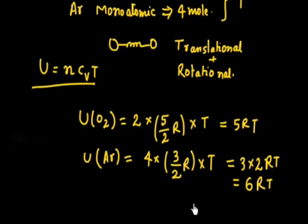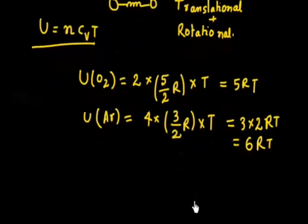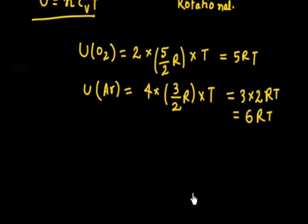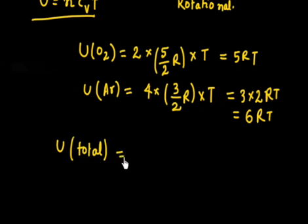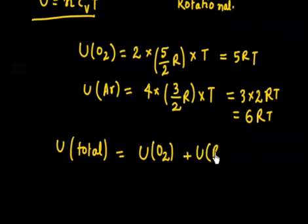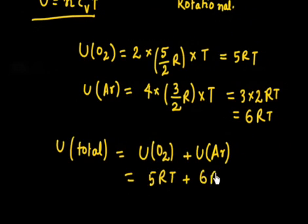So what is the total energy? You can see internal energy. If you are mixing these two gases, internal energy will be simply summed. So total internal energy will be internal energy of oxygen plus internal energy due to argon. So I have to write argon. Now this is 5 R T plus 6 R T. This is simple. So total internal energy will be 6 plus 5, 11 R T. So simple one.